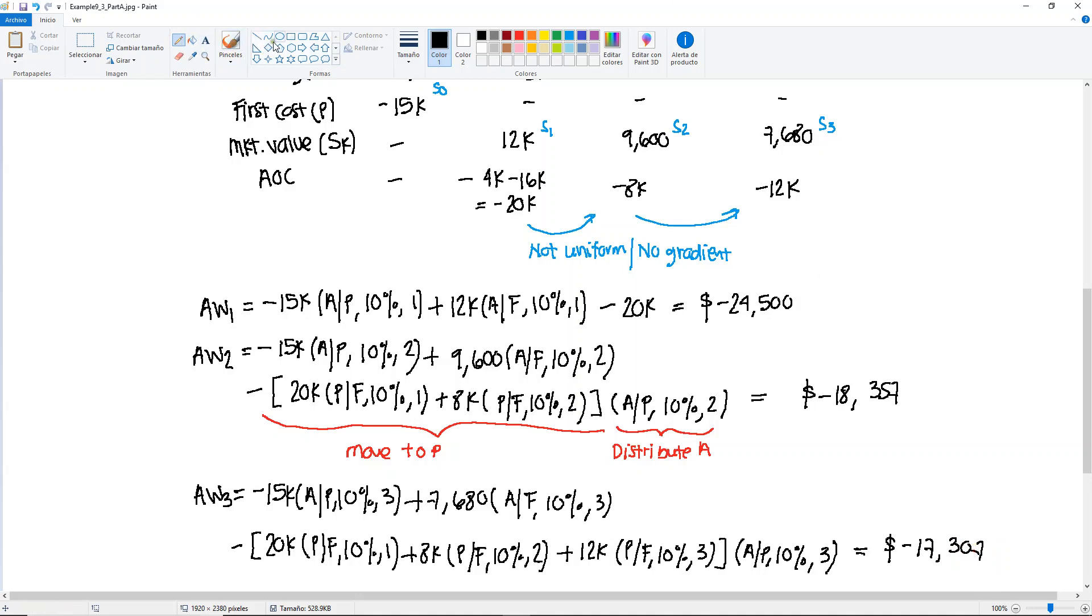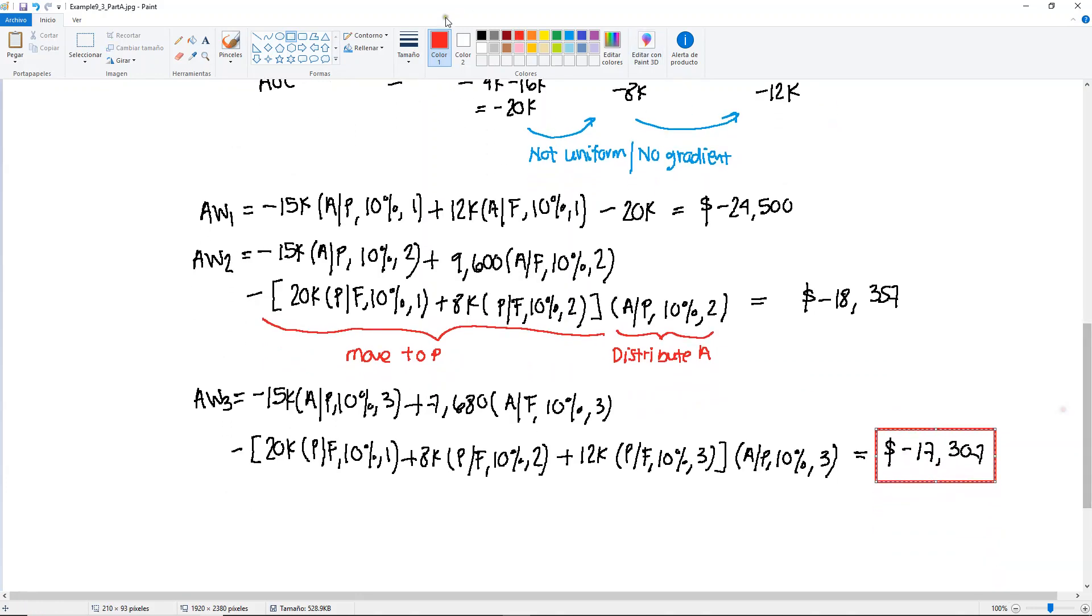From the three, the smallest one is the last one. So this right here will be your ESL for the defender, or in other words, it's the annual worth that we will be using for the defender in the replacement study, or the best N for the defender.